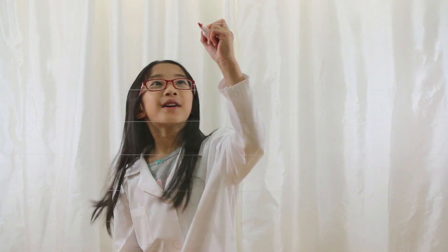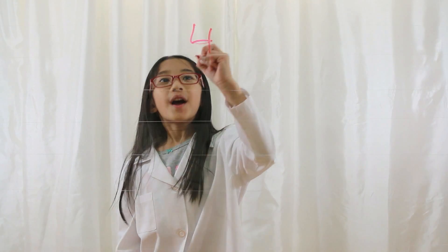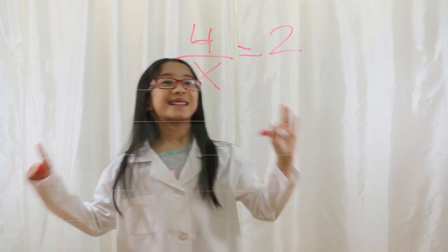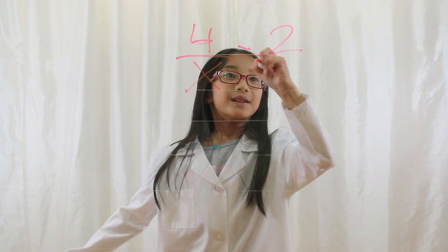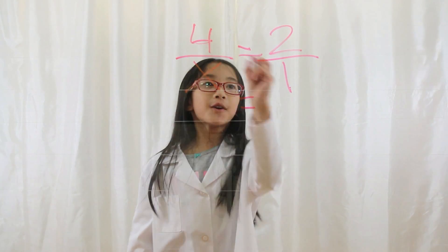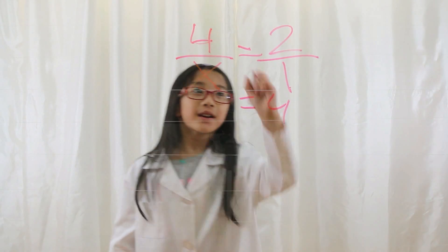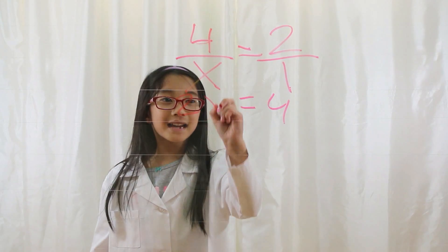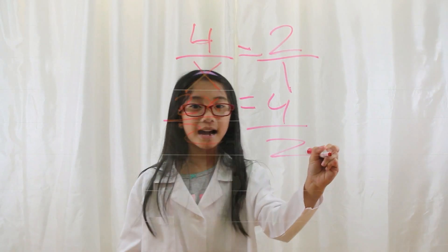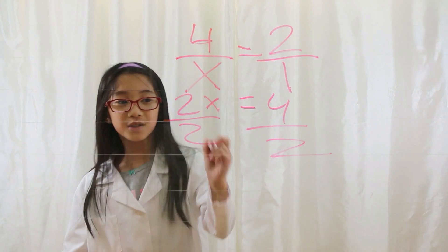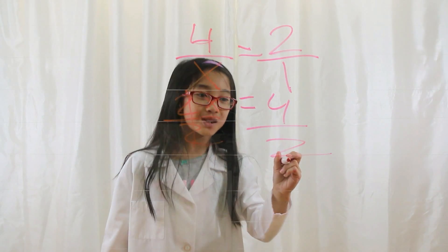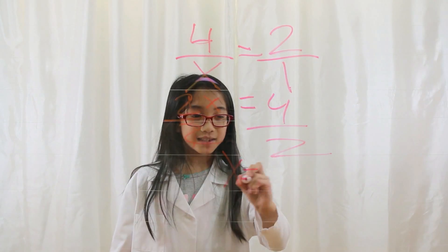Let's say you have 4 over x equals 2. You put a 1 underneath the 2. Now you cross multiply: 4 times 1 equals 4, and 2 times x is 2x. Now you solve for x by dividing by 2 on both sides. 2 divided by 2 is 1 — that cancels. 4 divided by 2 is 2. So x equals 2.